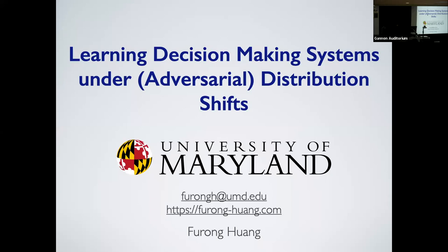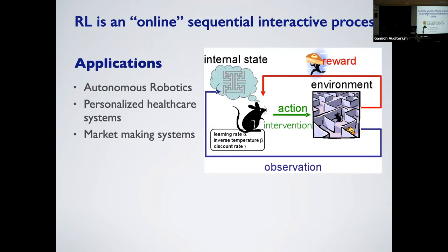Today's talk is "Learning Decision Making Systems under Adversarial Distribution Shifts." Reinforcement learning is really an effective way to model an interactive real-time decision making system, and it's grounded in high-stake applications such as autonomous robotics, autonomous driving, personalized healthcare, market-making systems, and so on.